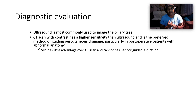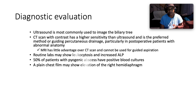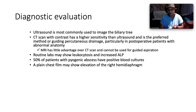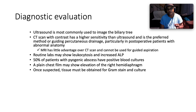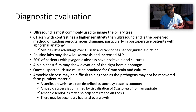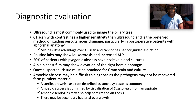For diagnostic evaluation, ultrasound of the liver is the most commonly used imaging modality. CT scan with contrast has higher sensitivity than ultrasound and is preferred, especially when guiding percutaneous drainage or in post-operative patients with abnormal anatomy. MRI has a slight advantage over CT but cannot guide aspiration. Routine labs show leukocytosis and elevated alkaline phosphatase. Fifty percent of patients with pyogenic abscess will have positive blood cultures due to septicemia. A plain chest X-ray may show elevation of the right hemidiaphragm. Tissue must be obtained for Gram stain and culture — tissue is the issue.